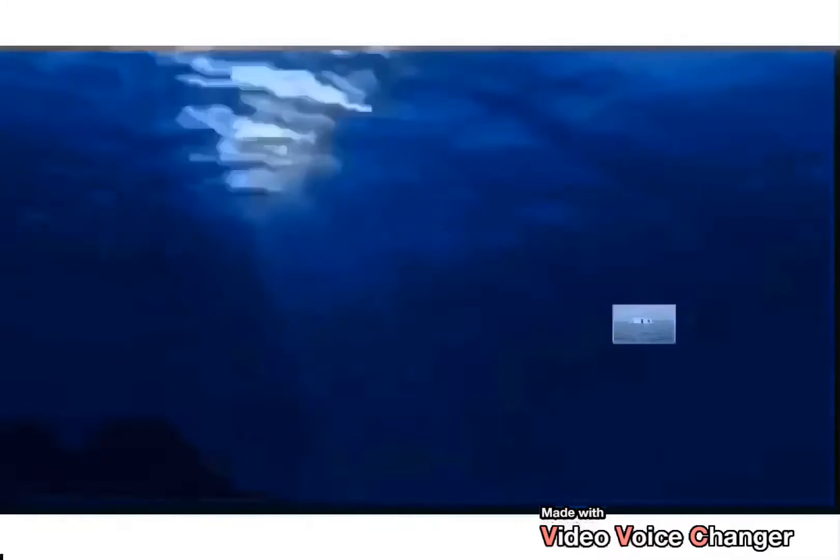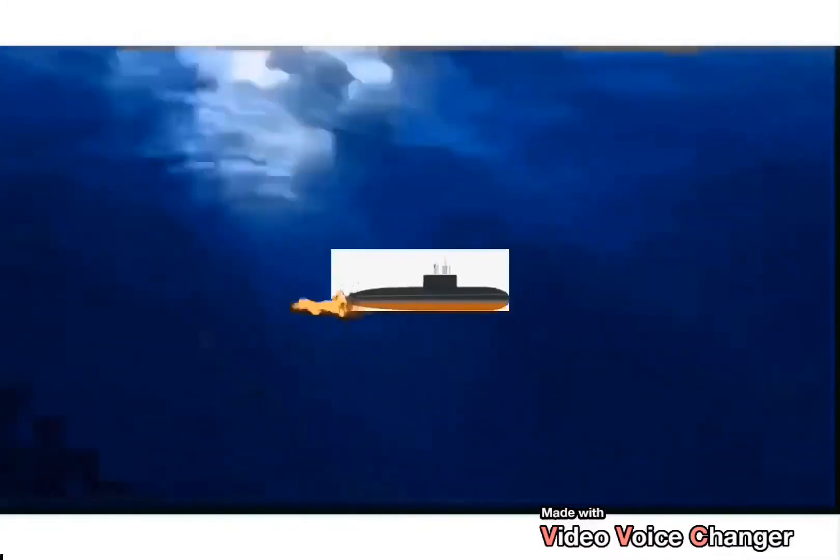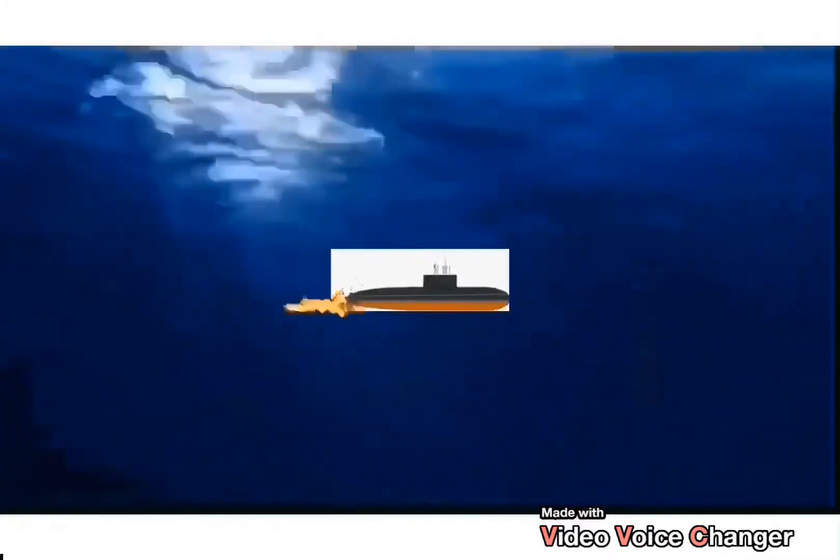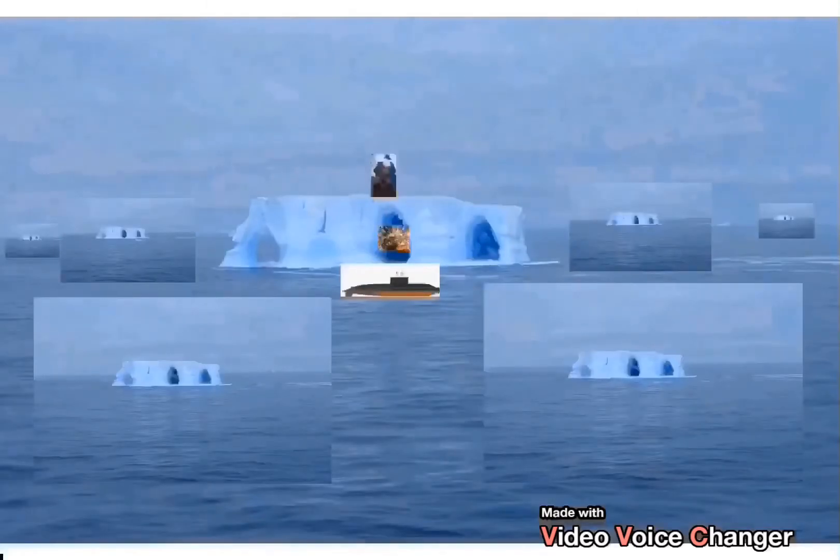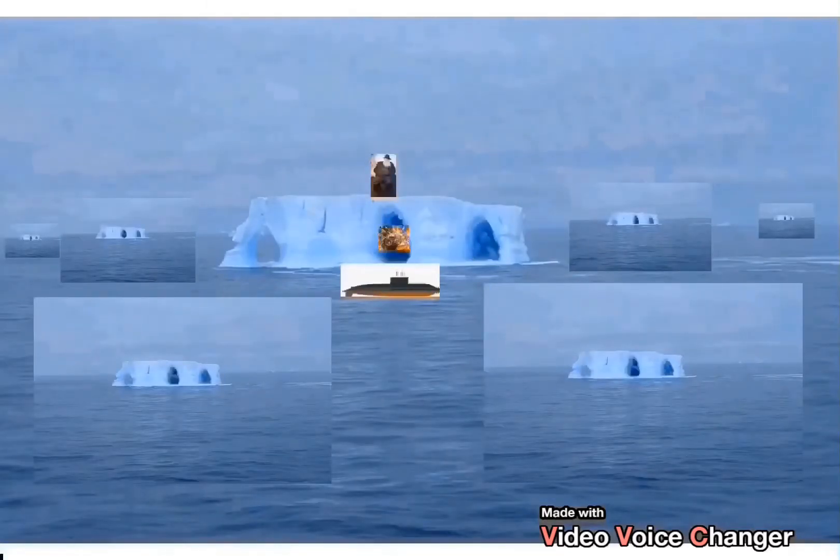Then he drove to the biggest iceberg he could find on his radar at light speed, vaporizing the water behind him with a submarine flaming underwater due to the force of the water hitting it. When he got there, the flaming stopped. Then he jumped out of his submarine and on top of the iceberg.